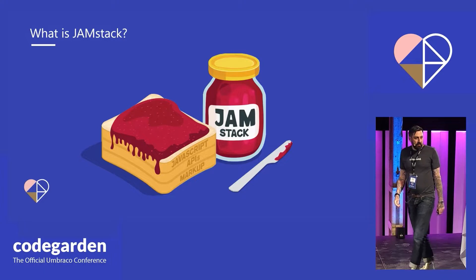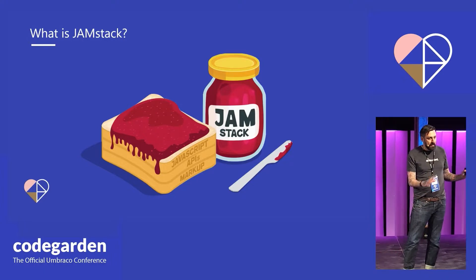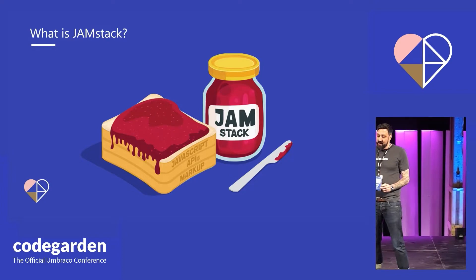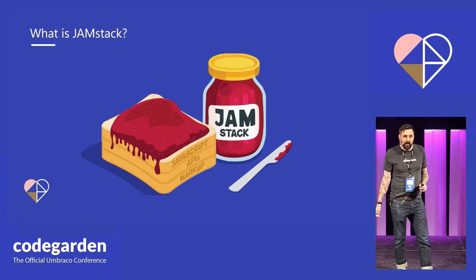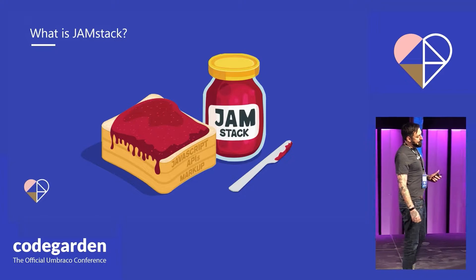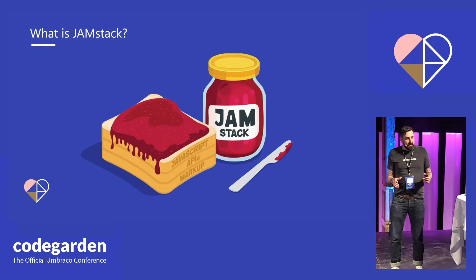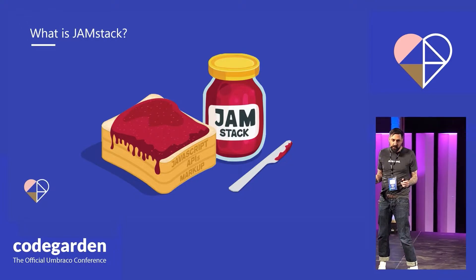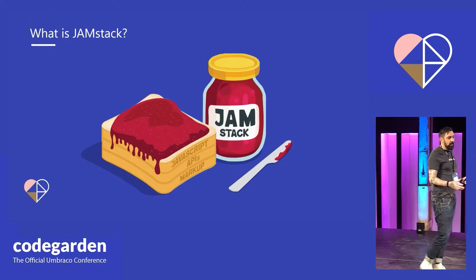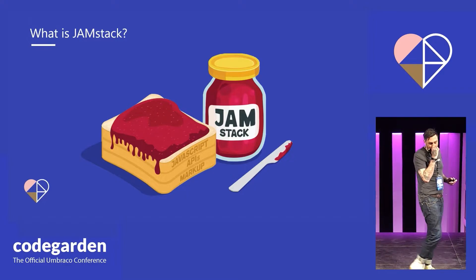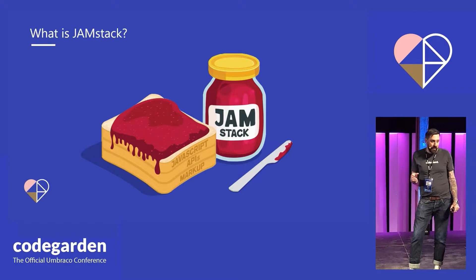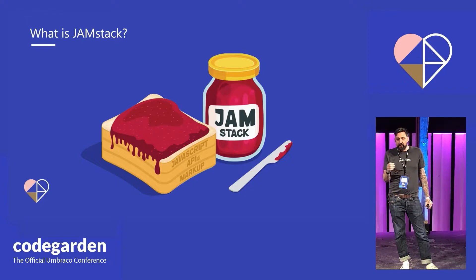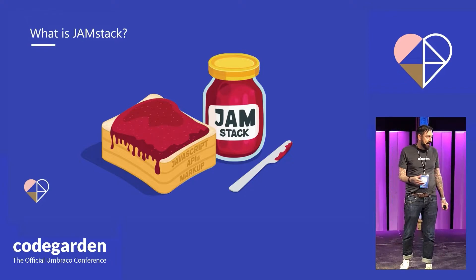Jamstack stands for JavaScript, API, and markup. There's one key principle with Jamstack: the term pre-rendering or pre-compiling of pages. It's very different from the old traditional way sites work. We use JavaScript to pre-render pages, which is the markup, and then we use APIs for anything we can't pre-render, like dynamic data.